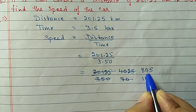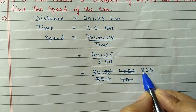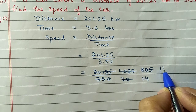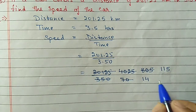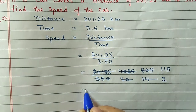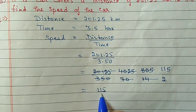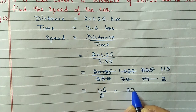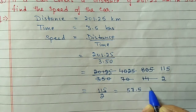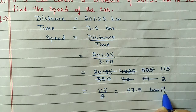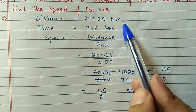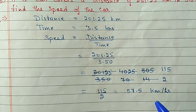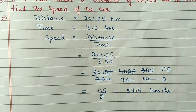After full cancellation we get 805 by 14, which further reduces with 7 to give 115 by 2. Converting to decimal: 115 ÷ 2 = 57.5 km per hour. Since distance was in km and time was in hours, the speed unit is km per hour.